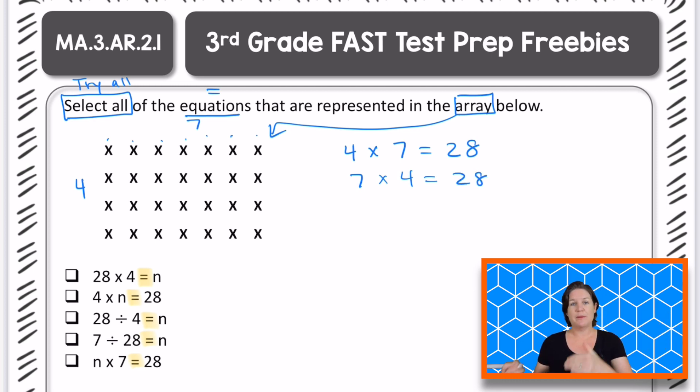So that's our fact family for multiplication. Now we need our fact families for division. So we need two division fact families there that are represented in this array because multiplication and division are inverse operations. So for division, we need the dividend first, the total first. And how many X's did we have in all?